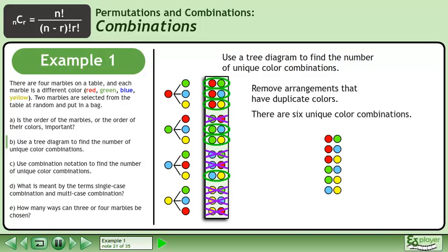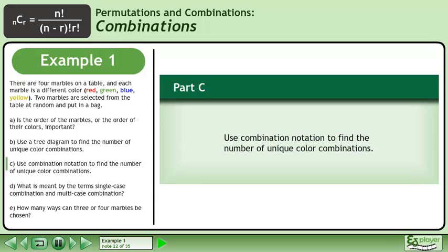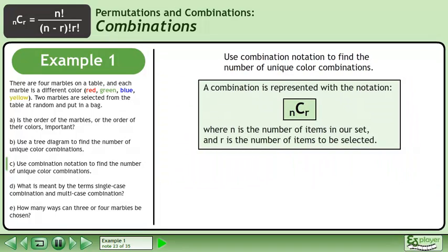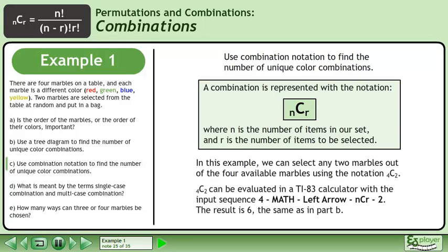There are six unique color combinations. In Part C, use combination notation to find the number of unique color combinations. A combination is represented with the notation NCR, where N is the number of items in our set and R is the number of items to be selected. In this example, we can select any two marbles out of the four available marbles using the notation 4C2. On a TI-83 calculator, enter 4, then MATH, left arrow, NCR, 2. The result is 6, the same as in Part B.